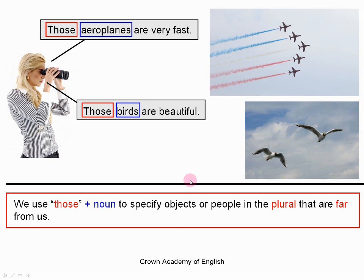So those are the four words. We use 'this' for singular nouns which are close to us. We use 'these' for plural objects which are close to us. We use 'that' for singular objects which are far from us. And we use 'those' for plural objects which are far from us.